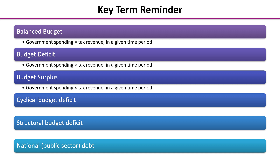If you've had a look at budget data for the UK for the last 30 or 40 years, you'll know that a budget surplus is a pretty rare occurrence. The cyclical budget deficit is where government spending is greater than tax revenue as a direct result of a recession or a downturn in the economic cycle. Think about how in a downturn, government revenue and spending change compared with what they're like in the upturn. If you can't remember about automatic stabilisers, please go back and revise them.